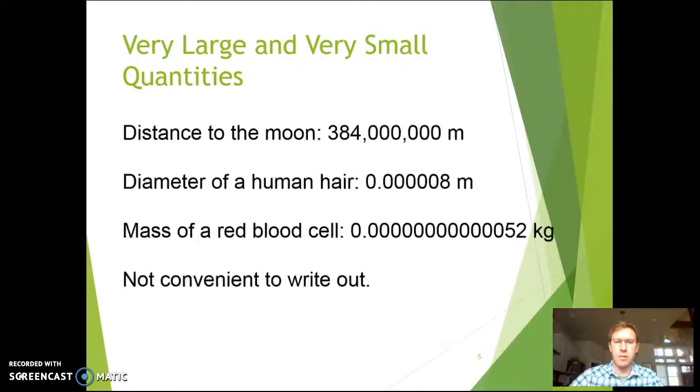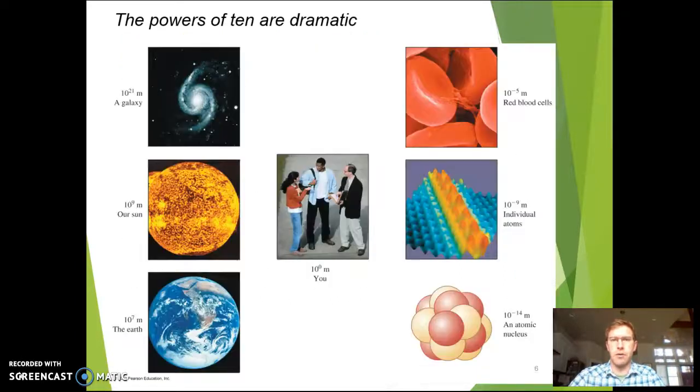Now there's going to be times this semester where we're dealing with very large numbers, like the distance to the moon, or very small numbers, like the diameter of a human hair or the mass of a red blood cell. And these are super inconvenient to try to write out by hand. In fact, if I asked you to write out the mass of a red blood cell by hand four or five times, you'd probably end up with the wrong number of zeros in there once or twice.